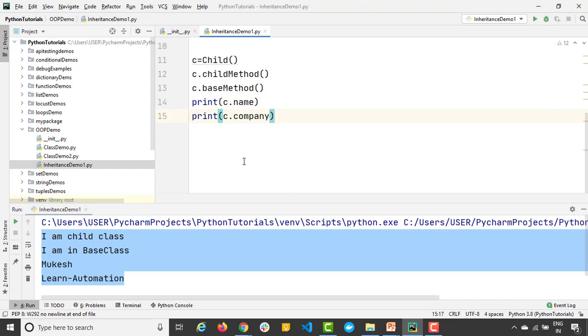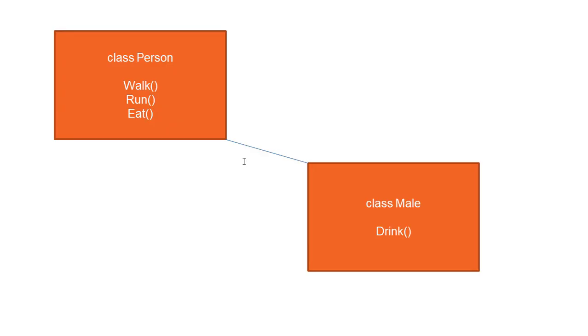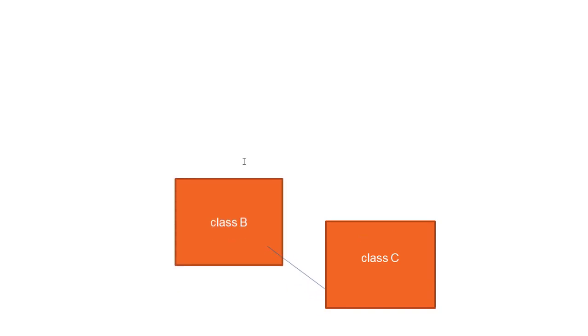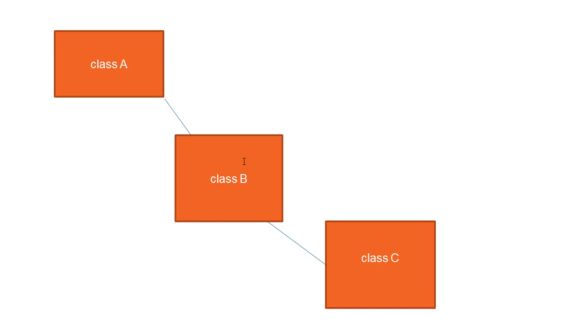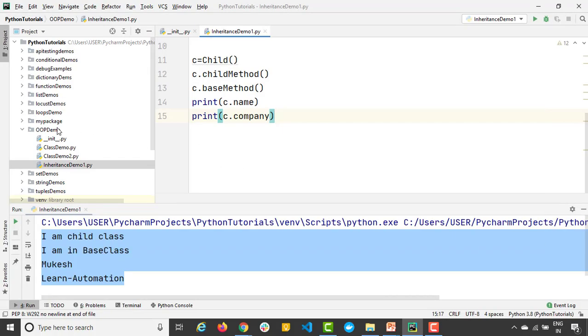Now let's jump into the second example: multi-level inheritance. What does multi-level inheritance mean? Suppose there are three classes A, B, and C. Class C extends class B, and class B inherits class A. So we have multiple levels of inheritance — and indirectly, class A inherits the object class. When there is a series of classes where each class extends another class, that concept is known as multi-level inheritance. Let me write a program to make all concepts clear.